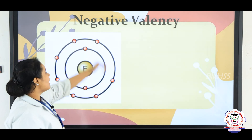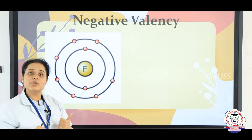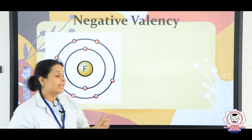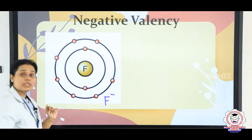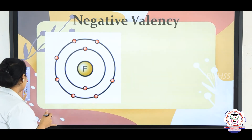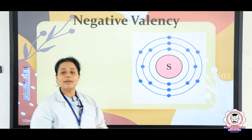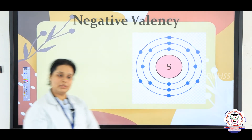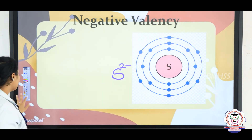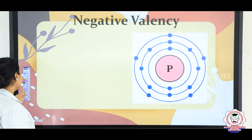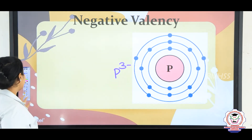Negative valency means that the electron is being added. In fluorine, the last shell has 7 electrons. To reach the stable configuration of neon, it needs one more electron, and when added, it has the charge F minus. For sulfur, adding 2 electrons gives S2 minus. For phosphorus, adding 3 electrons gives the phosphide ion, written as P3 minus.